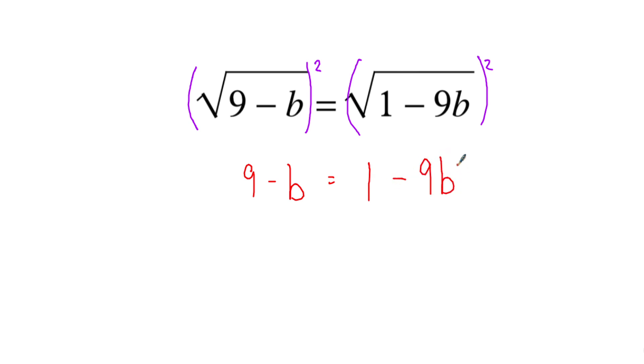Ultimate goal again - and I'm going to keep repeating myself - just get rid of those square roots and try to make it into a normal equation. So now that we have this, it's just an equation with variables on both sides. Just do your thing once again: subtract 9, try to get b by itself. 1 minus 9 is negative 8, minus 9b.